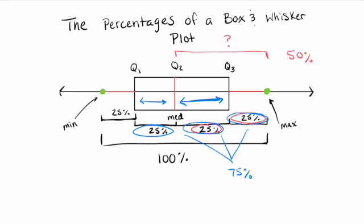And so these percentages of a box and whisker plot are always going to be this - it's always going to be 25% between these two, it's always going to be 25% between these two.